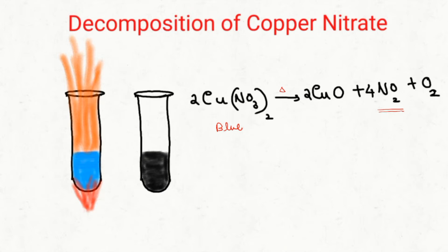After some time, a black colored residue will be found at the bottom of the test tube — that is nothing but copper oxide. You should memorize the color of all these substances. The observation of the reaction: whenever we are heating copper nitrate, the blue colored substance turns into a black residue of copper oxide, and along with that a reddish brown gas will be evolved out of the test tube.